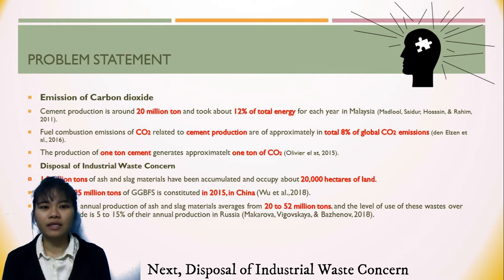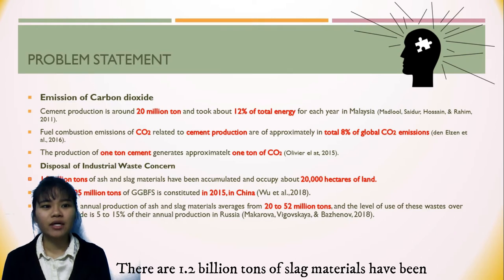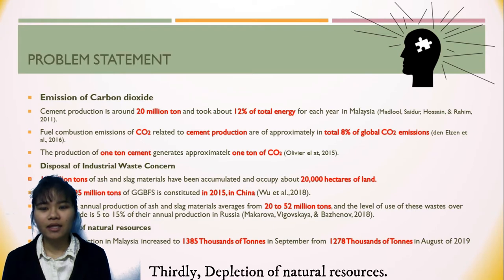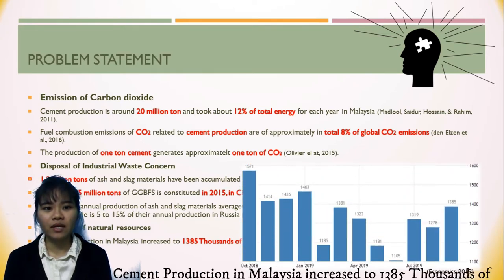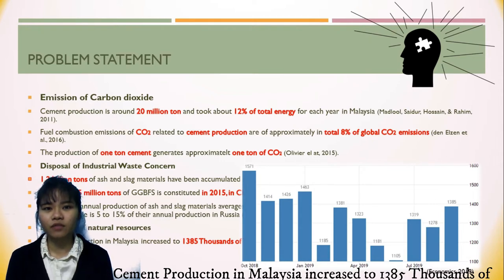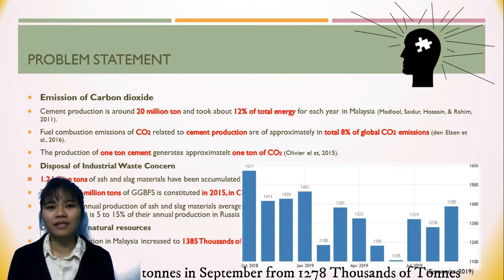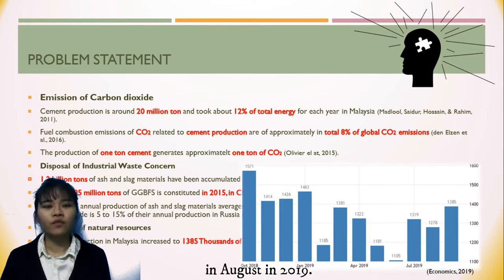Next, the depression of industrial waste concerns. There are 1.2 billion tons of sludge material that has been accumulated and occupied about 20,000 hectares of land. Thirdly, depletion of natural resources — cement production in Malaysia increased to 1,385,000 tons in September from 1,278,000 tons in August 2019.